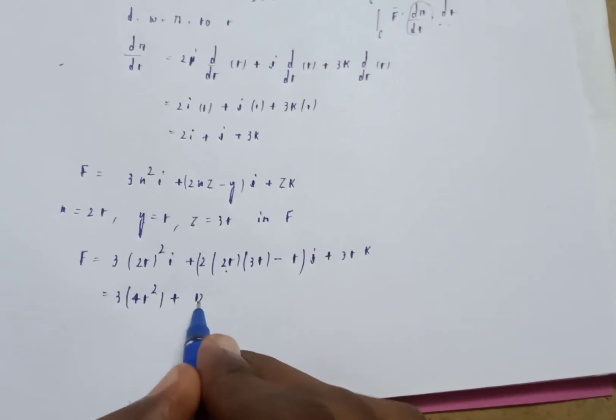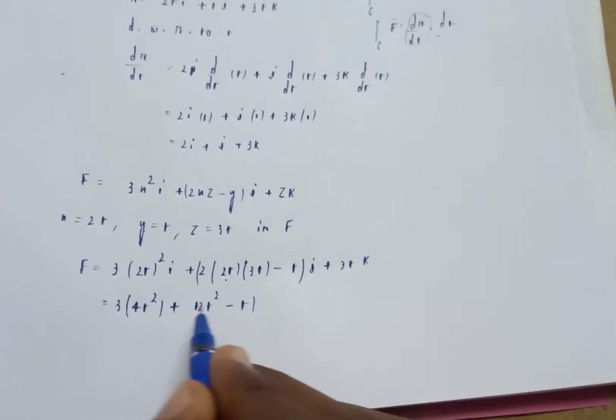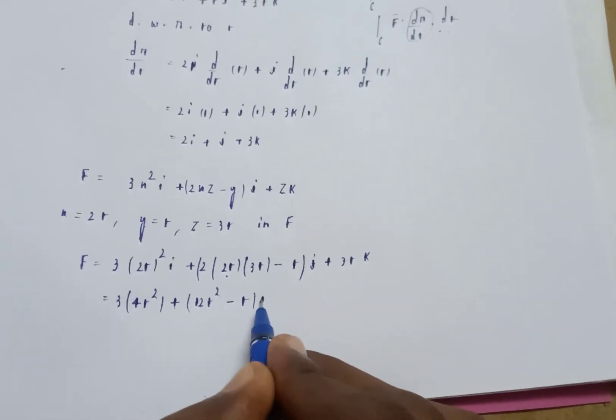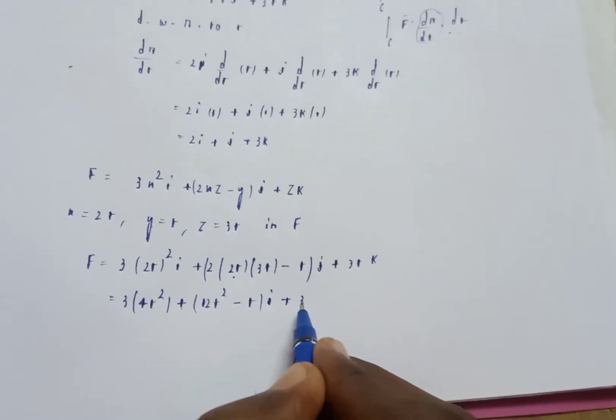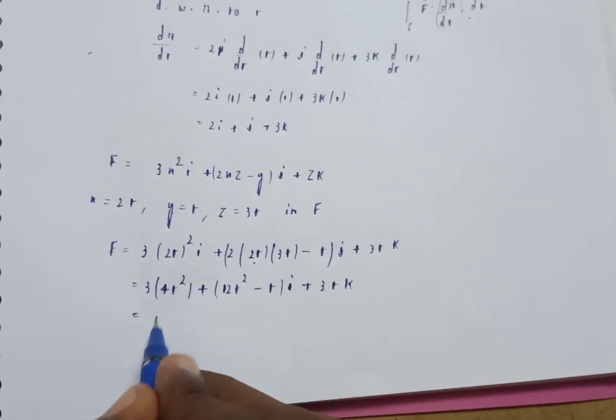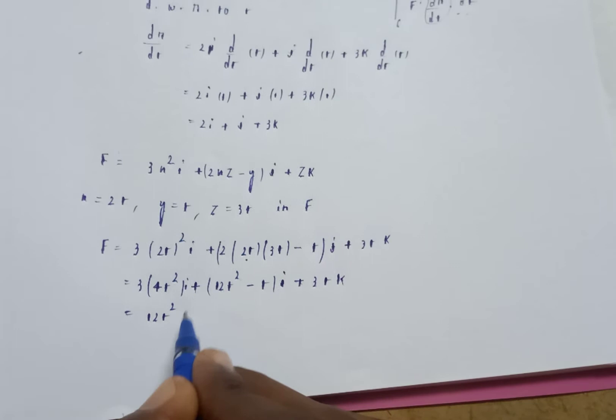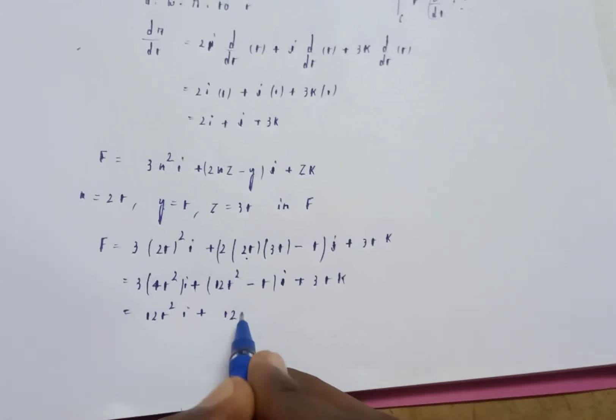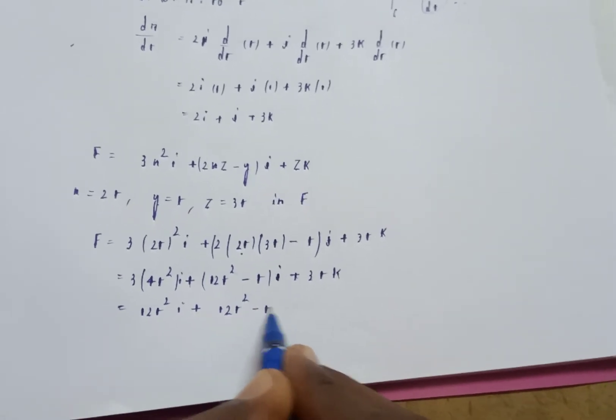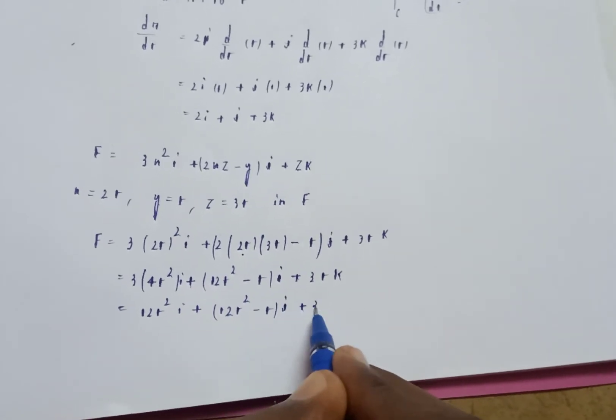plus 3tk. This gives 12t square i plus (12t square minus t) j plus 3t k.